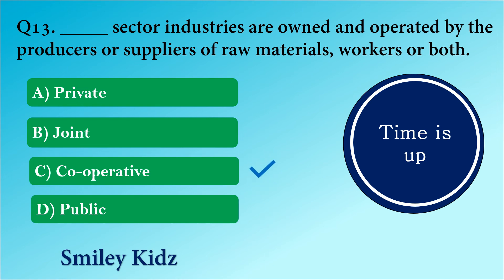The right answer is option C. Cooperative. Cooperative sector industries are owned and operated by the producers or suppliers of raw materials, workers or both.